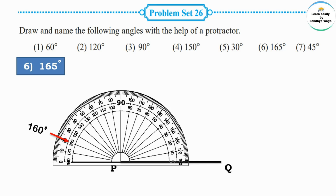After 160 degrees, count the small lines: 161, 162, 163, 164, and 165. This is the 165 degree marking. Mark a point here.